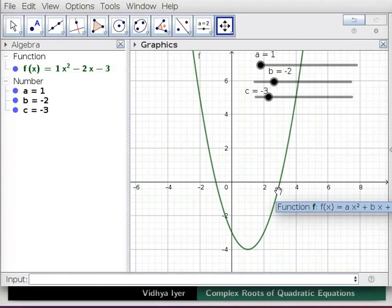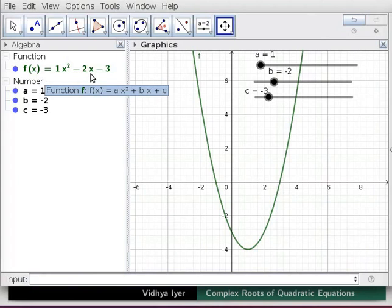Function f is a parabola intersecting x axis at -1, 0 and 3, 0. Thus, roots of f(x) = x² - 2x - 3 are x = -1 and 3.